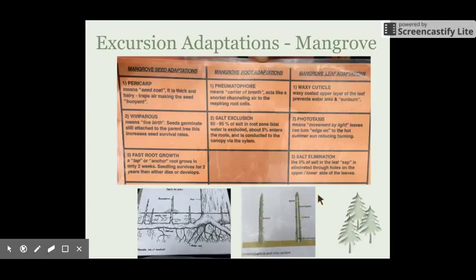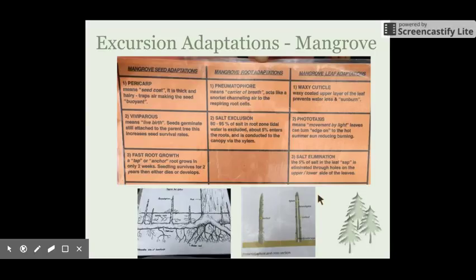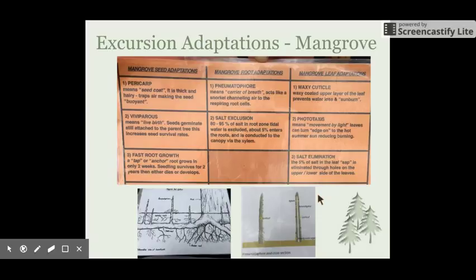Mangroves are really quite special in the way they've adapted to the estuarine or intertidal zone where they live. They're constantly inundated with salt water twice a day as the tide comes in and out, and over time they've developed these specialised adaptations to help them deal with that.